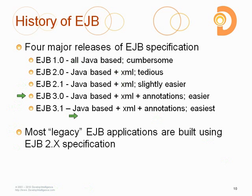In EJB 3.0 you could theoretically drop most XML in favor of annotations to describe your application — though 3.0 was only a baby step. The true convention-over-configuration model was realized in EJB 3.1, where the XML deployment descriptor became completely optional. Today with EJB 3.1, all you have to do is create Java classes, apply the appropriate annotations, optionally put together a single XML file, deploy, and you're done.